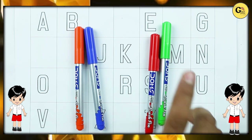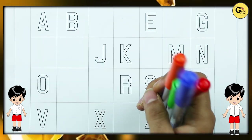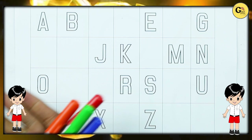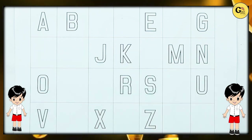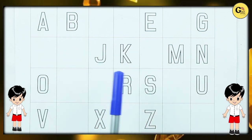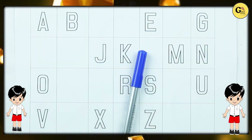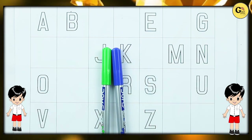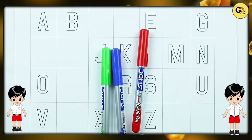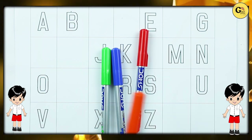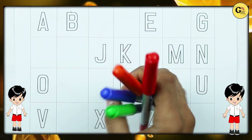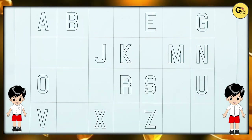Hello friends, today we learn the alphabet with filling in the blanks. Blue color, green color, red color, orange color. Let's start.